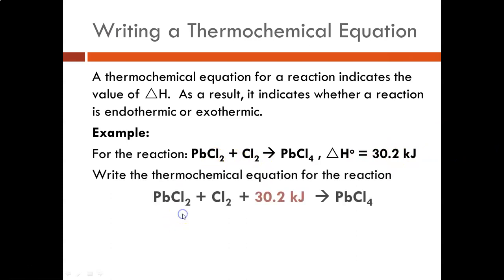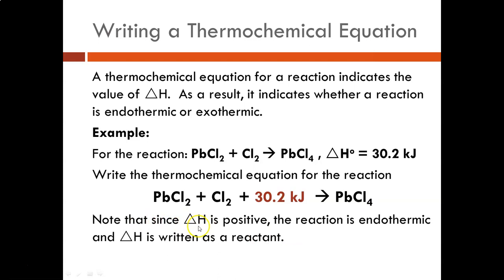Writing that equation, I'm going to show you that now I've added my delta H here. I have to add that energy in order for my reaction to produce products. So again, note that since delta H is positive, the reaction is endothermic and the delta H is written as a reactant.